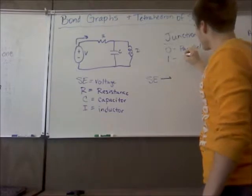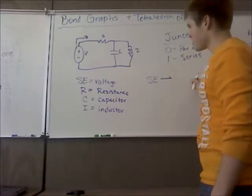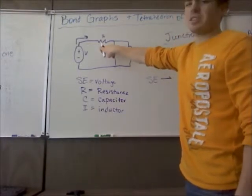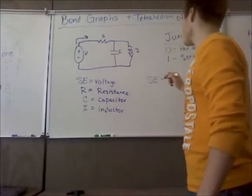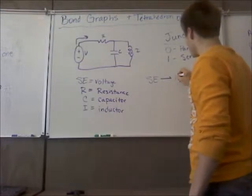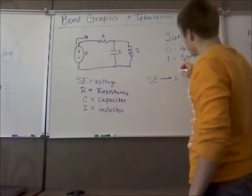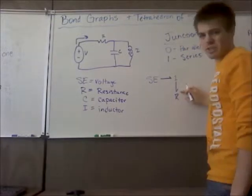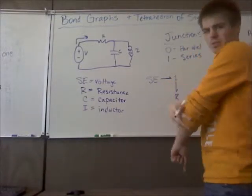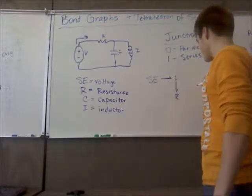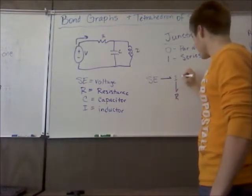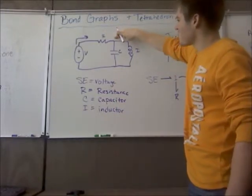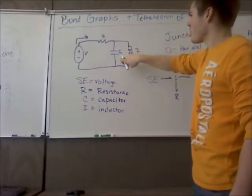And then a one is going to represent a series. So this first junction that we're coming into has a resistor in series with the voltage. So I'm going to put a one down here. And then I'm going to draw a line pointing towards the resistor because the voltage is flowing into the resistor.